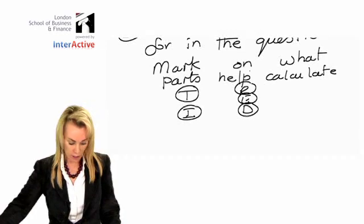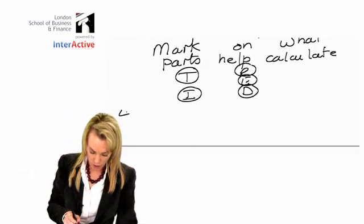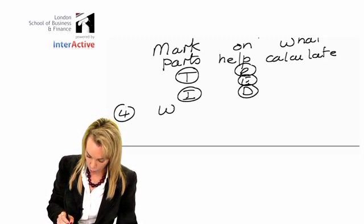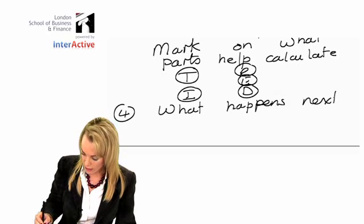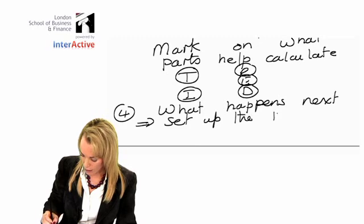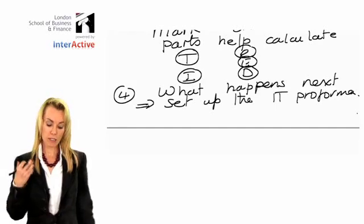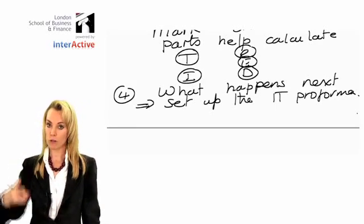The next key thing is what to do next. Once you've done that, what happens next? The next thing is to set up the pro forma, income tax pro forma. You must know the income tax pro forma. That's another key fact that you must know what the income tax pro forma looks like.